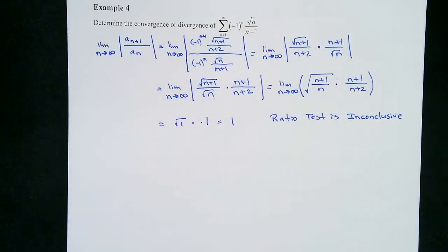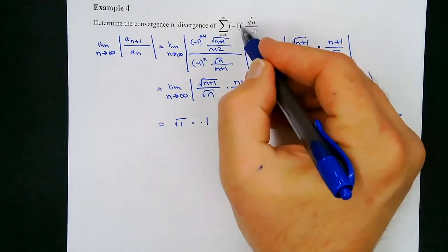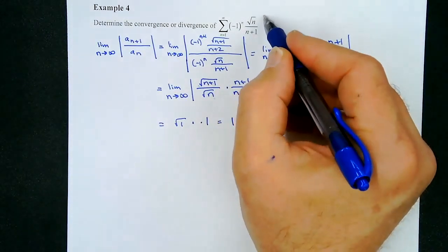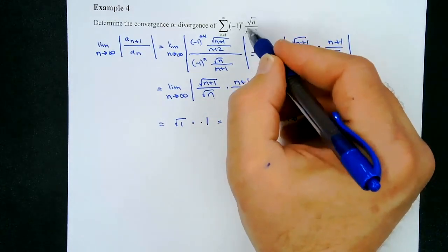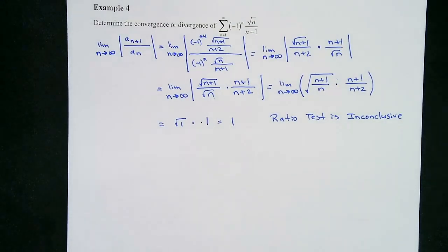Since we have (−1)^n, we should think about the alternating series test. For an alternating series, we need to show: (1) that a_sub_n is positive for all n ≥ 1, (2) that the limit as n → ∞ of a_sub_n equals zero, and (3) that a_(n+1) ≤ a_sub_n — meaning the terms are decreasing. Here our a_sub_n is √n / (n+1), without the (−1)^n factor.